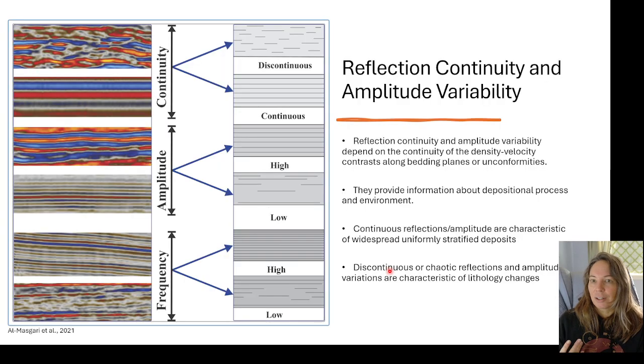This is a great example of reflection continuity and amplitude variability. What we've got here are some examples looking at continuity where we have very discontinuous and then continuous features shown in seismic and also with a diagram. In terms of amplitude, we can have very low amplitude and very high amplitude. And then in terms of frequency, we could have higher frequency and also lower frequency. We could have very discontinuous patterns. There's a lot that we could start to pick out and describe in terms of these different elements for seismic interpretation.